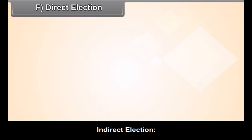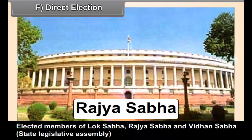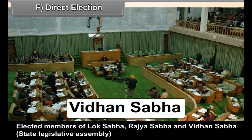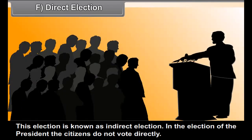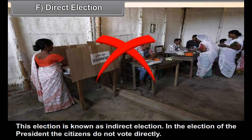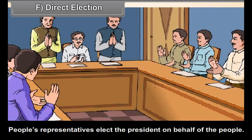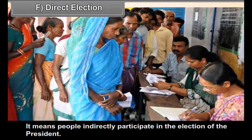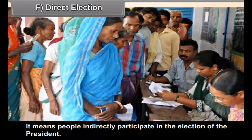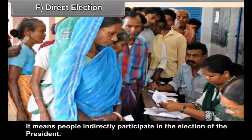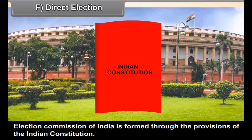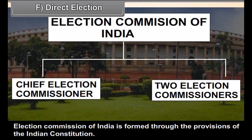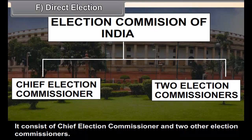Direct election: Voters in India elect representatives to Lok Sabha and state legislative assemblies directly. This is called direct election — people directly vote for their representatives. Indirect election: Elected members of Lok Sabha, Rajya Sabha, and Vidhan Sabha vote for the election of the President of India. This is known as indirect election. Citizens do not vote directly; people's representatives elect the president on behalf of the people, meaning people indirectly participate in the election of the president.